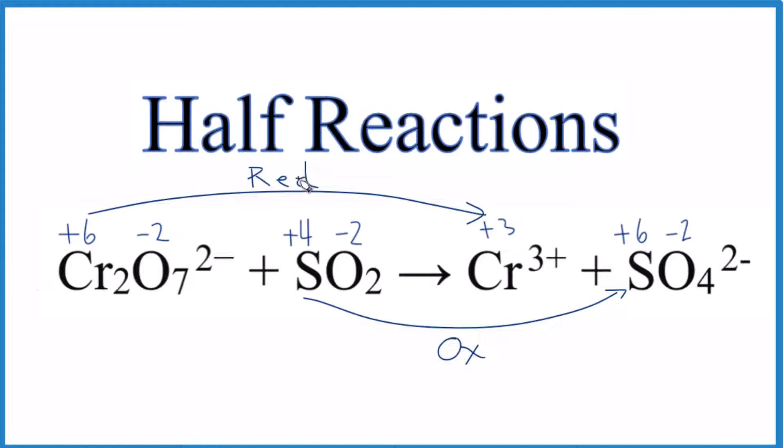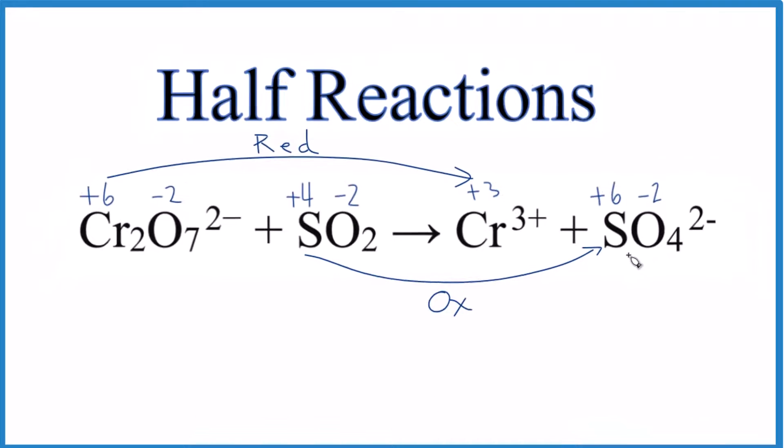So here the chromium's reduced, it gained electrons. And here it's oxidized, it lost electrons. And these are the half reactions.